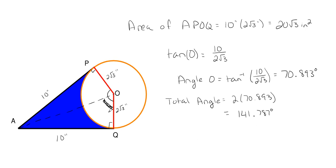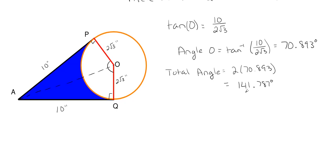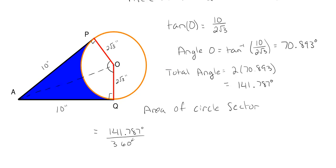Now that we have the total angle at O, we need the area of this circle sector. Since a full circle is 360 degrees, we only need 141.787 out of 360 degrees of the circle's area. The area of the circle sector equals (141.787 divided by 360) times pi times radius squared, where the radius is 2 square roots of 3, squared. This gives a total white circle sector area of 14.848 inches squared.